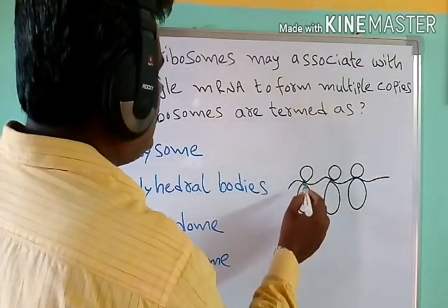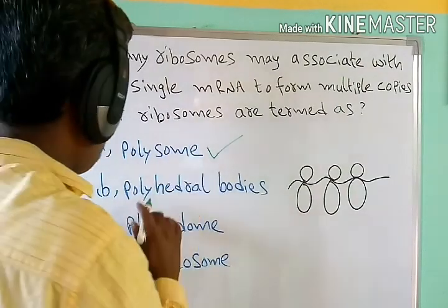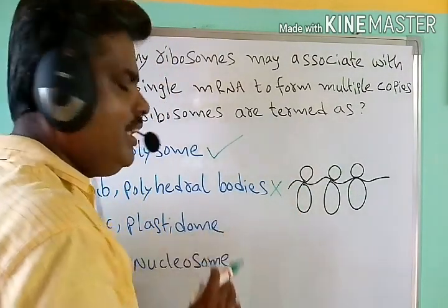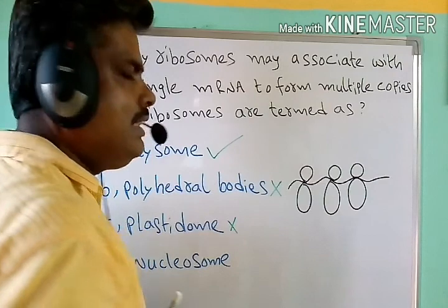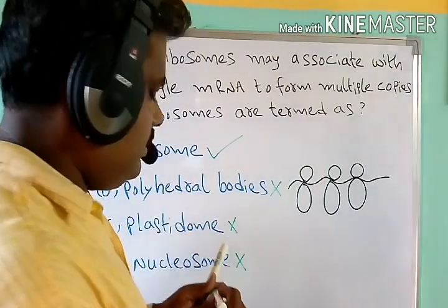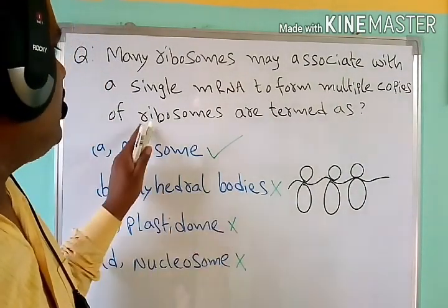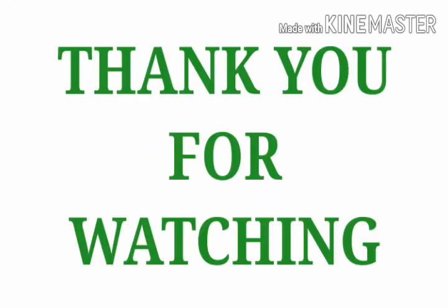Polysome means the association of ribosomes with mRNA, and that is correctly called a polysome. So polysome is the correct option. Polyhedral bodies are present in bacteria, so that is not correct. Plastidome is a group of plastids, not related to this question. Nucleosome is part of chromatin made of DNA and histone protein, also not correct. Therefore, polysome is the term used for the association of ribosomes with mRNA.